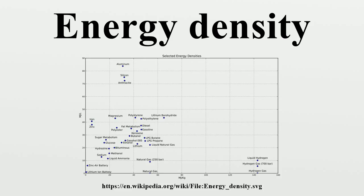The following unit conversions may be helpful: 1 MJ = 0.28 kWh = 0.37 HPH. In energy storage applications the energy density relates the mass of an energy store to the volume of the storage facility, e.g., the fuel tank. The higher the energy density of the fuel, the more energy may be stored or transported for the same amount of volume.